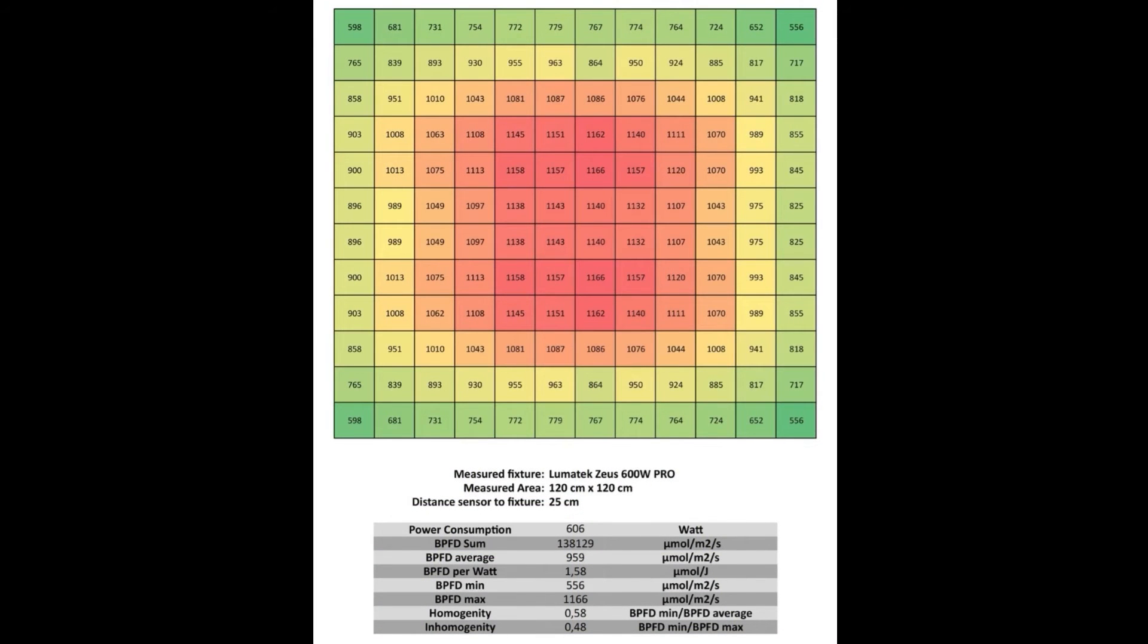This is the light plot of our measurement at 25 cm distance from the sensor to the fixture. The measured fixture is the Lumotech SUSE 600 Watt Pro. She's measured in a 120 x 120 cm tent. The measured power consumption was 606 watts. The PPFD sum is 138,129 micromole per square meter per second. The PPFD average is 959. The PPFD per watt is 1.58.